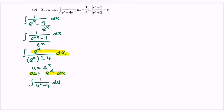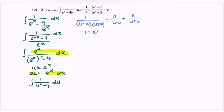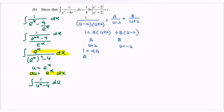We factor the denominator: 1 over (u minus 2)(u plus 2). The basic partial fraction structure is A over (u minus 2) plus B over (u plus 2), so 1 equals A(u plus 2) plus B(u minus 2). To find A, eliminate B by substituting u equals 2: we get 1 equals 4A, so A equals 1 over 4.